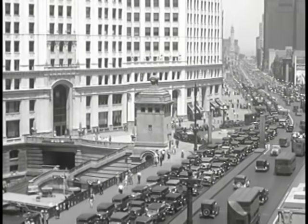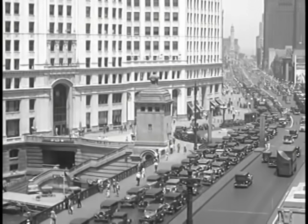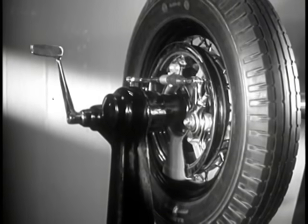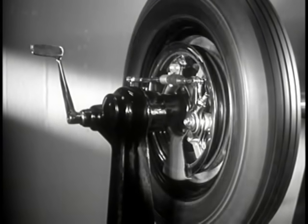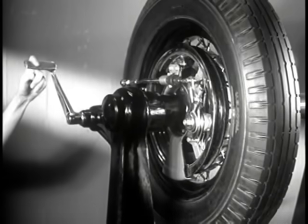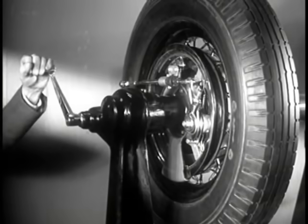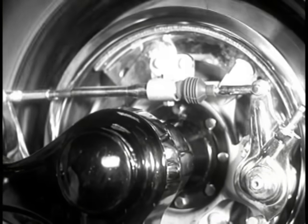No better example of dependable brakes can be found than those manufactured by the Chevrolet Motor Company. This is the Chevrolet Wheel and Brake. Notice how smoothly the wheel comes to a stop with the slightest pressure on the pedal, and how quickly the wheel stops when a sharp pressure is applied.